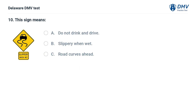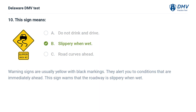This sign means: A. Do not drink and drive. B. Slippery when wet. C. Road curves ahead. Answer: B. Slippery when wet. Warning signs are usually yellow with black markings. They alert you to conditions that are immediately ahead. This sign warns that the roadway is slippery when wet.